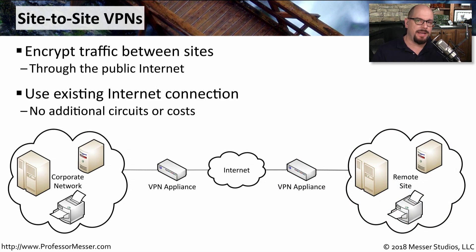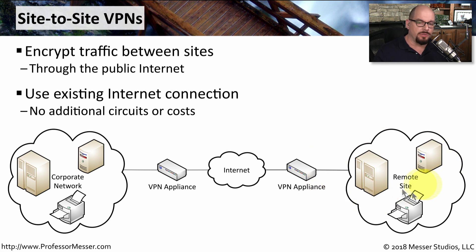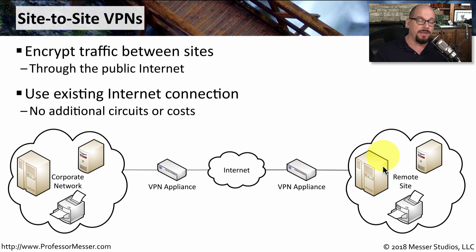The common implementation of IPsec is through a site-to-site VPN, where you might have one corporate network on one side of the network and perhaps a remote site on the other side. You want to be able to communicate between both of these locations, which already have an internet connection, but you don't want to use the public internet for private company information. Instead, we'll build a private tunnel between both sites so that encrypted information can be sent across the internet.